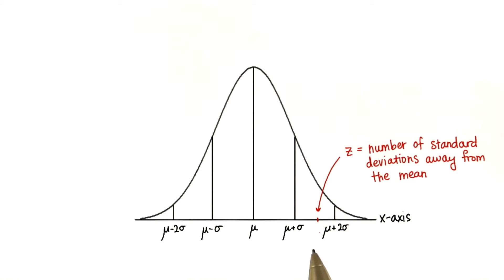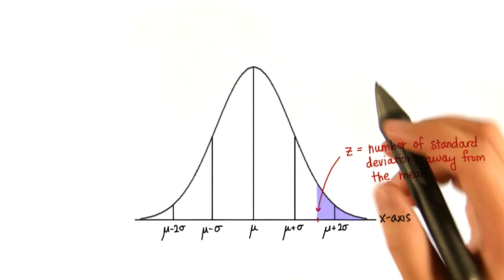By converting scores in a normal distribution to this special number z, we can know the percent less than or greater than that value.